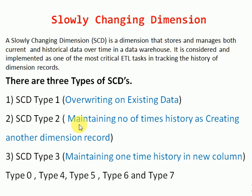Type 2 means maintaining history as new records, any number of times. For example, if a customer changes their phone number frequently — say five times — and you want to maintain all four previous phone numbers, you can go for type 2. Type 2 will insert a new record every time a change comes from the source system. You can find all previous phone numbers as additional records, and identify the latest one based on a version number or status flag.